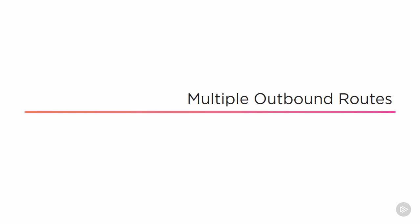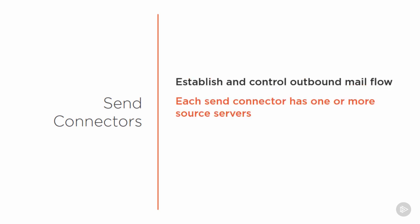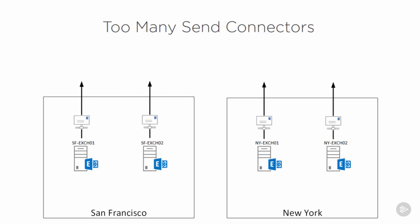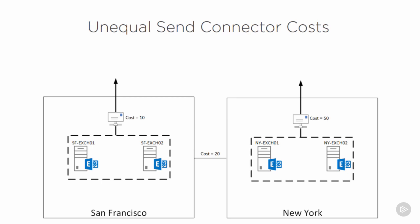Having dealt with high availability and site resilience for the inbound mail flow, let's look at outbound mail flow. From previous videos, we know that outbound mail flow is controlled using send connectors. Each send connector has one or more source servers that are used to route mail out that send connector. The source servers can either be mailbox servers or edge transport servers that have been subscribed to that Active Directory site. One send connector per internet-facing site is an appropriate solution, with each connector having multiple source servers configured. Send connectors have a cost, just like AD site links, and that cost is taken into account for calculating the least cost route out of the organization. Unequal costs on send connectors is a way of controlling which send connector is used for outbound mail.